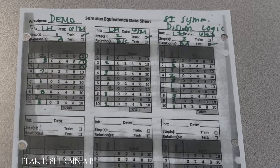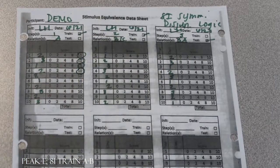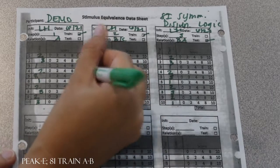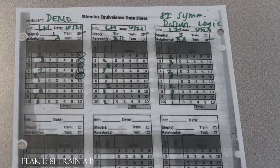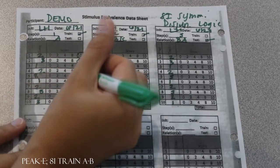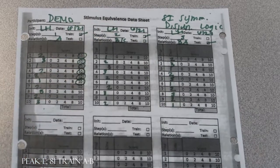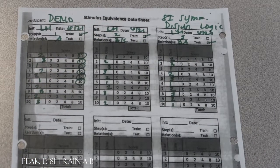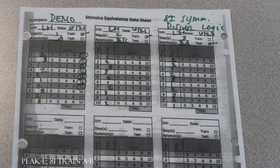Say rainy day is the same as sunny day. Rainy day is the same as sunny day. Good. Say blue is the same as cyan. Blue is the same as cyan. Very good. Say pet is the same as a house animal. Pet is the same as a house animal. And say rainy day is the same as a sunny day. Rainy day is the same as sunny day. Good.